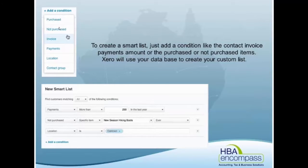The first condition is purchased or not purchased, then invoice, payments, location, or contact group. You then click on options like 'more than,' or you can be specific with 'is.' It's something that you probably need to have a play around with yourself to actually see how it can work for you.